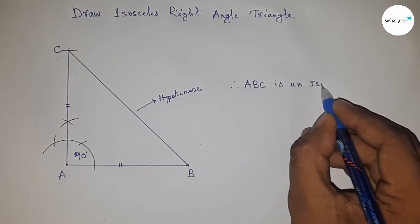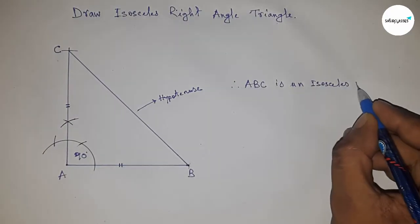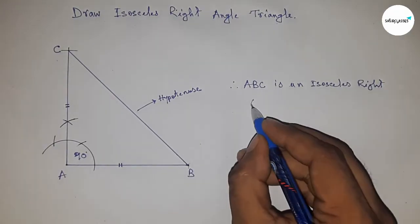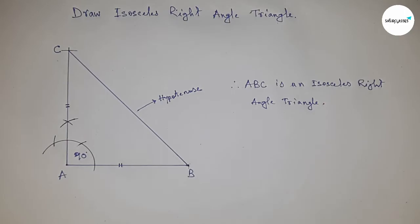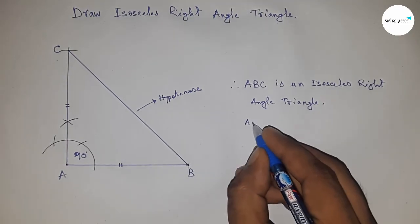So it is an isosceles right angle triangle and length of AB equal to length of AC.